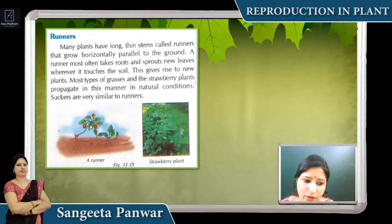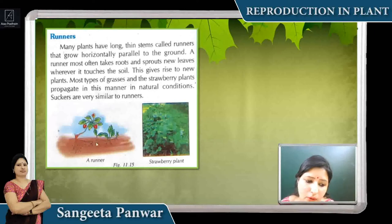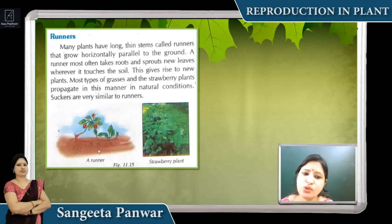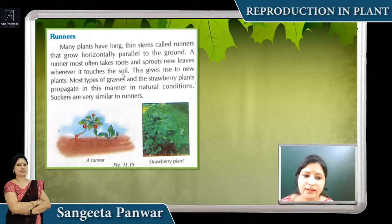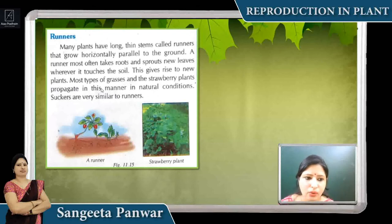In some plants, runners grow horizontally on the land — like strawberries and grasses. Many plants have a long thin stem called runners, and they grow horizontally and parallel to the ground. A runner most often takes roots and sprouts new leaves wherever it attaches to the soil. From that part, new roots and shoots emerge. Most grasses and strawberry plants are propagated by the runner form.